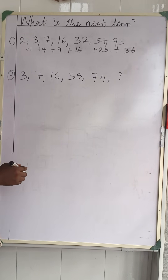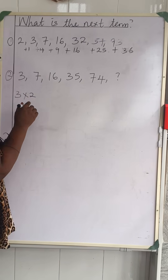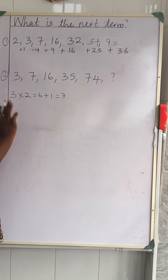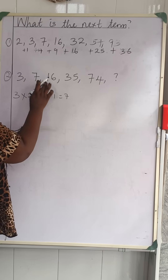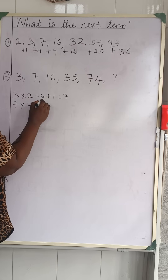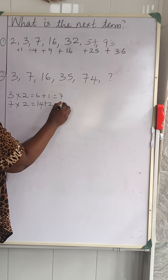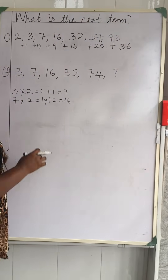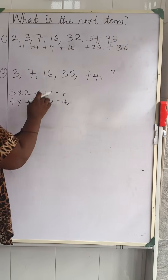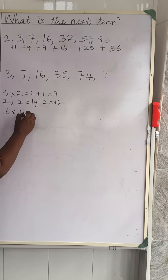Let's try this: 3 times 2 is 6, and 6 plus 1 is 7 — and we have 7 here. So we multiply by 2 then add an incrementing number. Then 7 times 2 is 14, and 14 plus 2 is 16 — we have 16. Here we added 1, and here we added 2. Then 16 times 2 is 32, and 32 plus 3 is 35 — that's what we have.